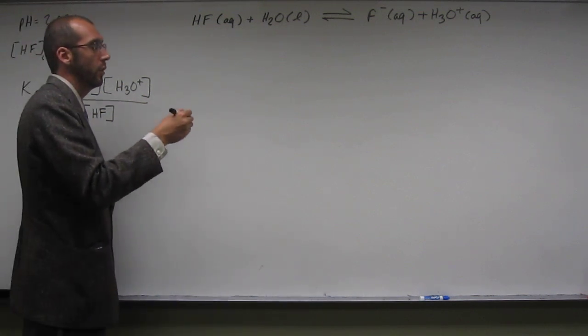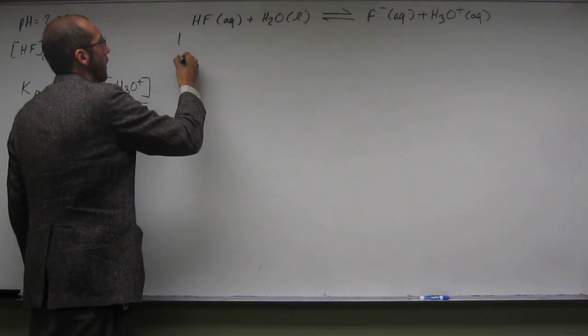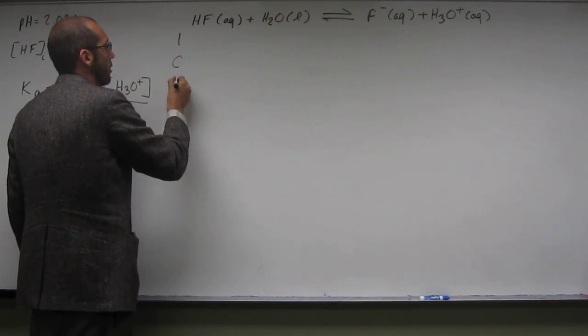So what you're going to have to do is set up what we call an ice table. So ice, initial change equilibrium. So I, C, E, initial change equilibrium.